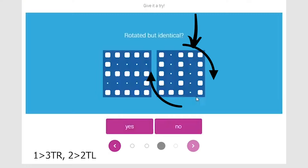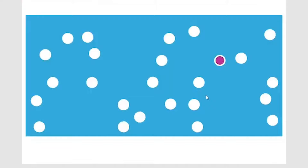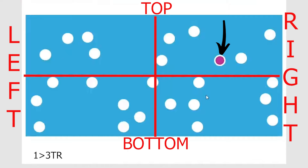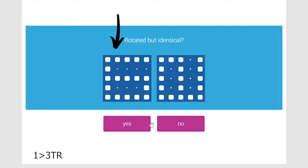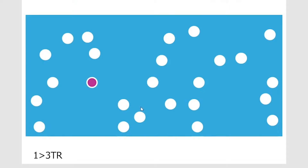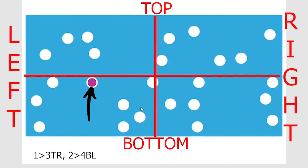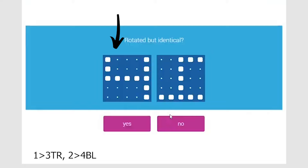Then we get another memory question — the dot appears at approximately the second position in the top left corner. Another rotation question: the left figure looks like number 5, and if I rotate the right figure 90° clockwise it also becomes number 5. So yes, they are identical. Now we pick the position of the dots.